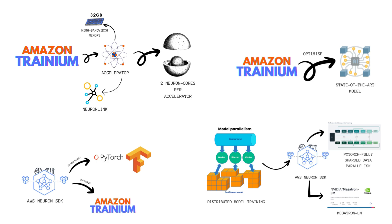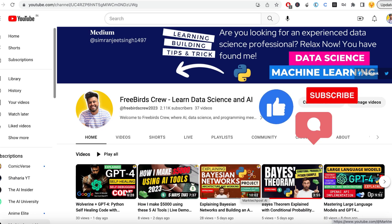That's a wrap. With AWS Terranium, you can generate accurate ML predictions for NLP and computer vision use cases using Amazon SageMaker Canvas. Its optimized hardware and native support for ML frameworks and libraries make it a powerful and cost-effective solution for training state of the art models. So why wait? Get started with AWS Terranium and take your machine learning game to the next level.